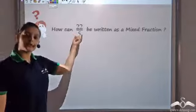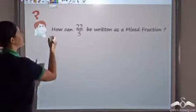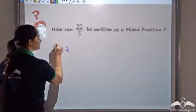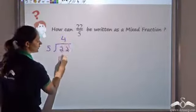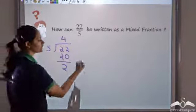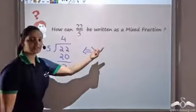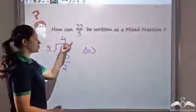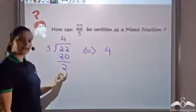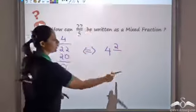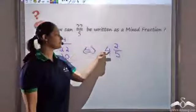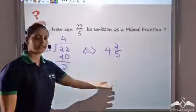Now can you convert twenty-two by five to a mixed fraction? I need to divide twenty-two by five. Five fours are twenty, leaving a remainder of two. So for the mixed fraction, the integer part is the quotient which is four, the numerator of the fraction part is the remainder which is two, and the denominator remains the same which is five. So twenty-two by five can be written as four and two by five in mixed number format.